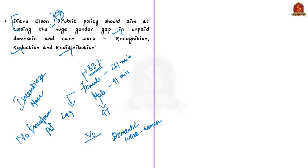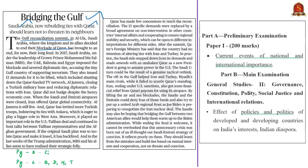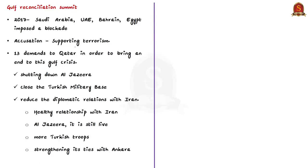This is all about this article. Now, let us move on to the next article. This editorial article talks about international relations between Saudi Arabia and Qatar and how Saudi Arabia is rebuilding its ties with Qatar. In the recently held Gulf Reconciliation Summit, Saudi Arabia and its allies decided to put an end to the blockade with Qatar, bringing an end to their long-held enmity. Way back in 2017, Saudi Arabia along with the United Arab Emirates, Bahrain and Egypt imposed an economic blockade and ended their diplomatic ties with Qatar.